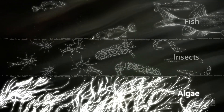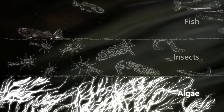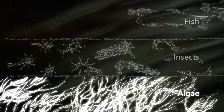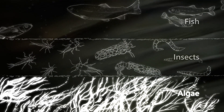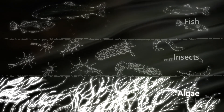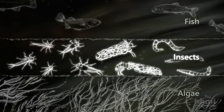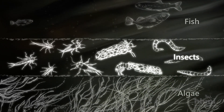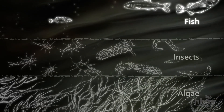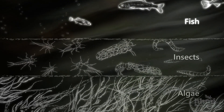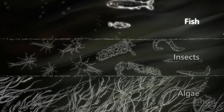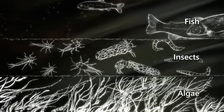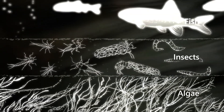Algae are the base of the food web — they are at the lowest trophic level. The amount of algae and the type of algae both determine the health and diversity of the insects that eat it, and in turn they determine the food supply for the fish that eat them. And then there are bigger fish that feed on the little fish. So all of this energy is flowing up the food web.